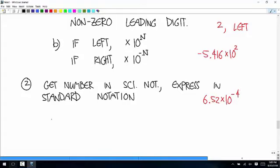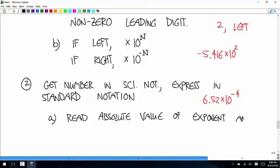So the first thing you have to do is read the absolute value of the exponent and its sign. The exponent is negative four, so in our example, the absolute value of the exponent, that's what I'm going to call capital N again, so N in this case is equal to four, and the sign is negative.